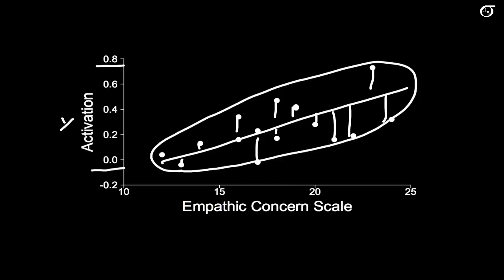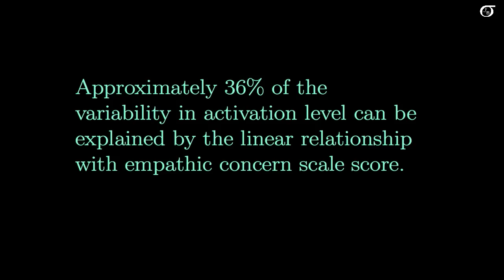We sometimes express that as a percentage. Remember that our R was 0.60, and our R squared was 0.36, often expressed as a percentage. We might say: approximately 36% of the variability in activation level can be explained by the linear relationship with empathic concern scale score. Approximately 36% of the variation in Y can be explained by the linear relationship with X.